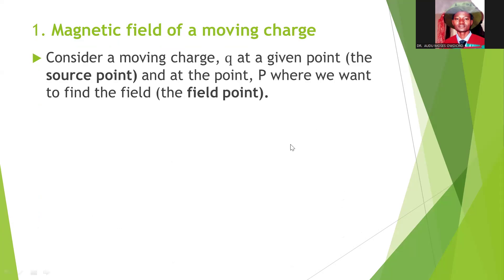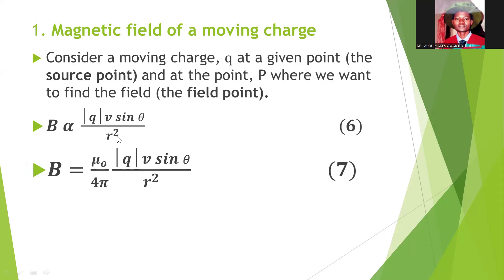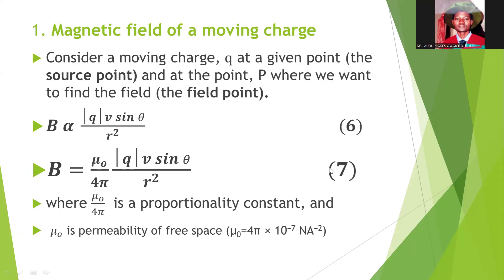Let's look at a moving charged particle. We consider a moving charged particle q at a source point, and we want to find the magnetic field produced at a field point. The magnetic field produced will be directly proportional to the charge, the velocity, and the sine of the angle, but inversely proportional to the square of the distance, as given by equation 6. Equation 7 is used to calculate the magnetic field of a moving charge.